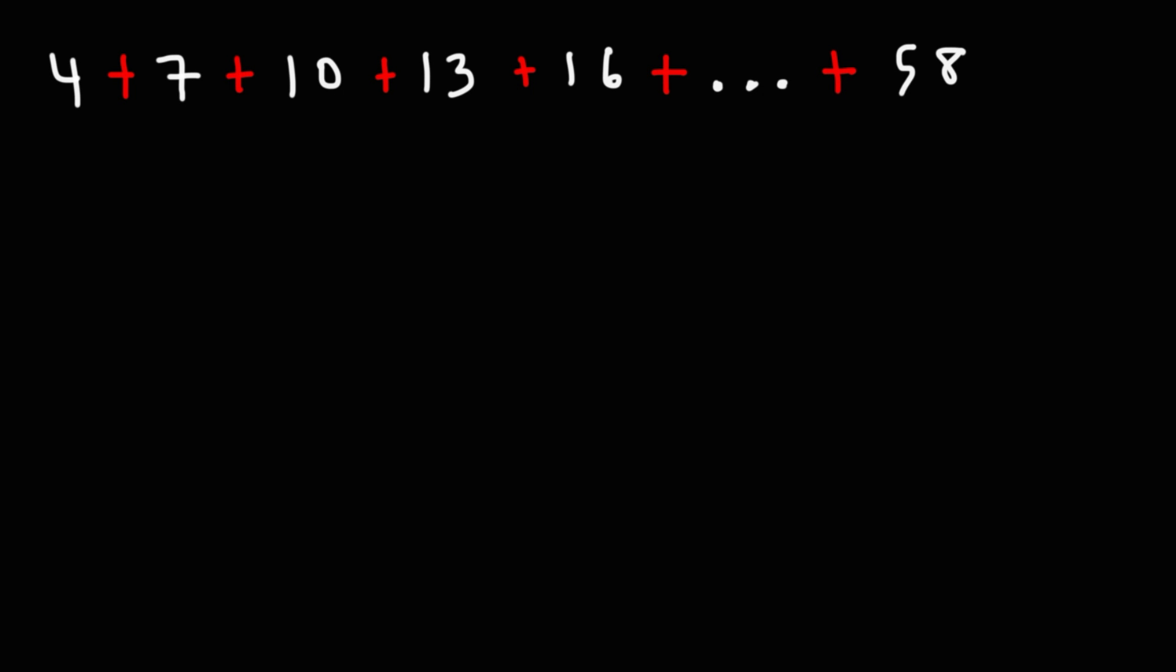In this lesson, we're going to find the sum of the arithmetic series that we have on the screen. Now, in order to get the answer, we could simply use a calculator and add up the numbers 4 plus 7 plus 10 plus 13 plus 16 plus 19 plus 22 all the way to 58. But we're going to use a formula to get the answer.